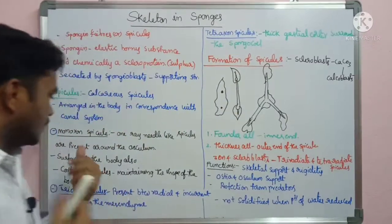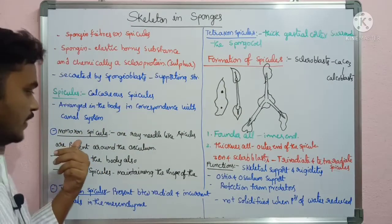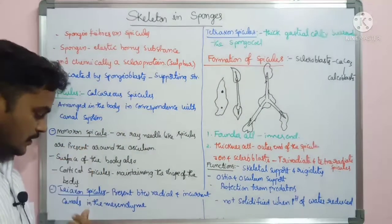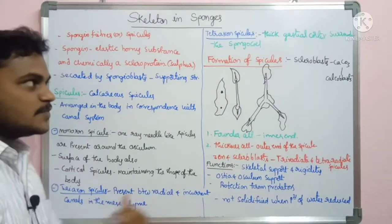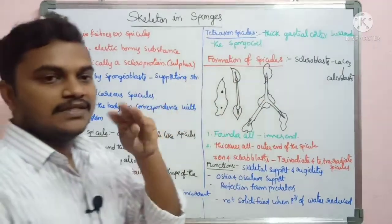Spicules are of three types: monaxone spicules, triaxone spicules, and tetraxone spicules.